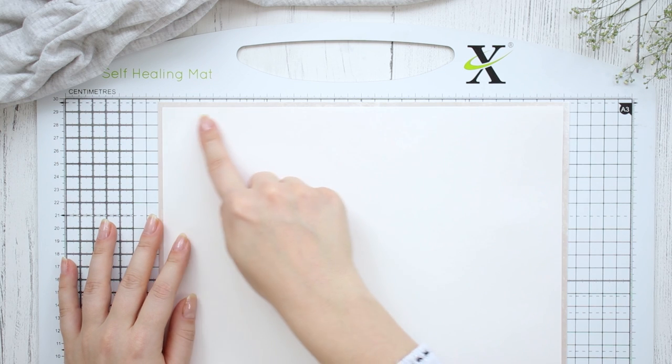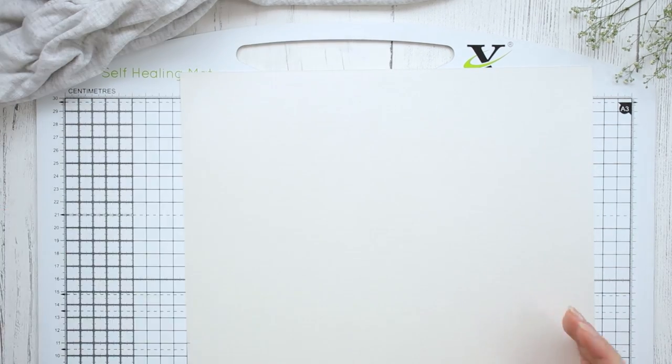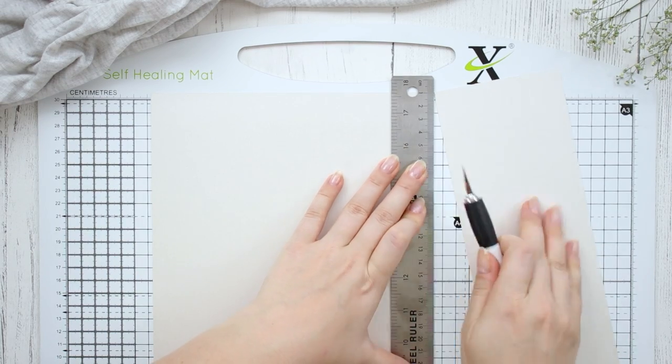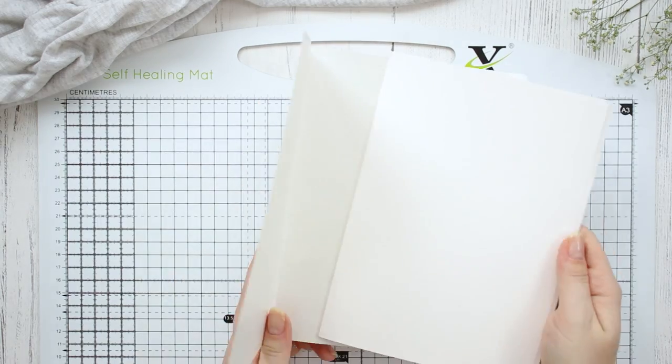The length of my cardstock was already good. I only had to measure the same height as my paper and then trim off the excess. Fold the cover in half and then put all your pages inside your cover.